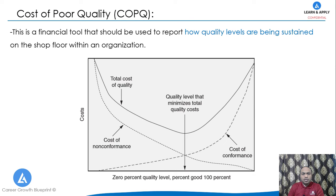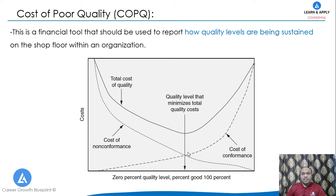As a summary, cost of poor quality is a financial tool that should be used to report how quality levels are being sustained on the shop floor within an organization. Regarding the relationship between quality level and cost: as prevention cost (cost of conformance) increases, the cost of non-conformance (internal and external failure) decreases. However, beyond a certain point, further increases in prevention cost yield very little reduction in non-conformance cost. The point at which total cost of quality is minimum is the optimal target.